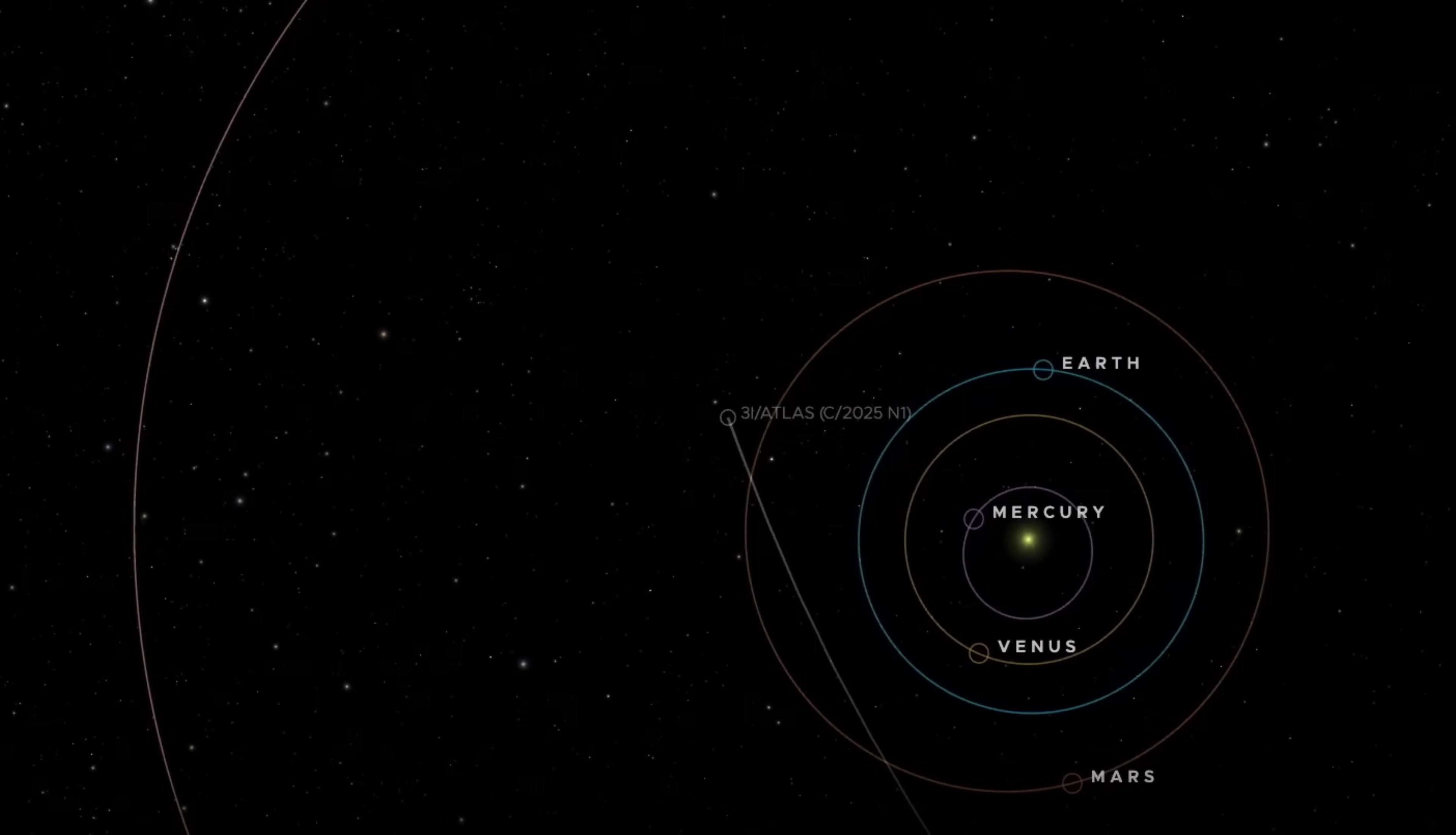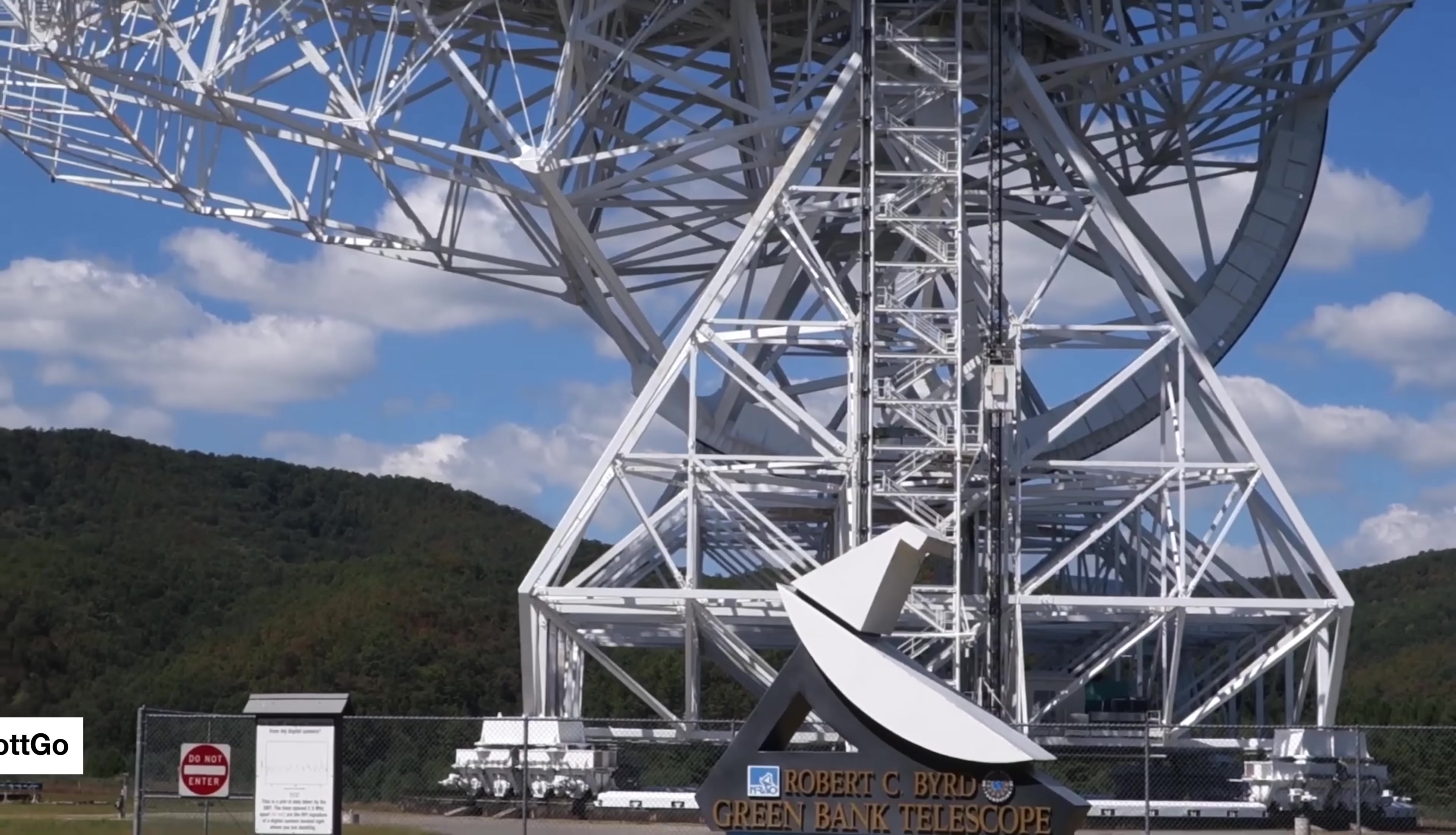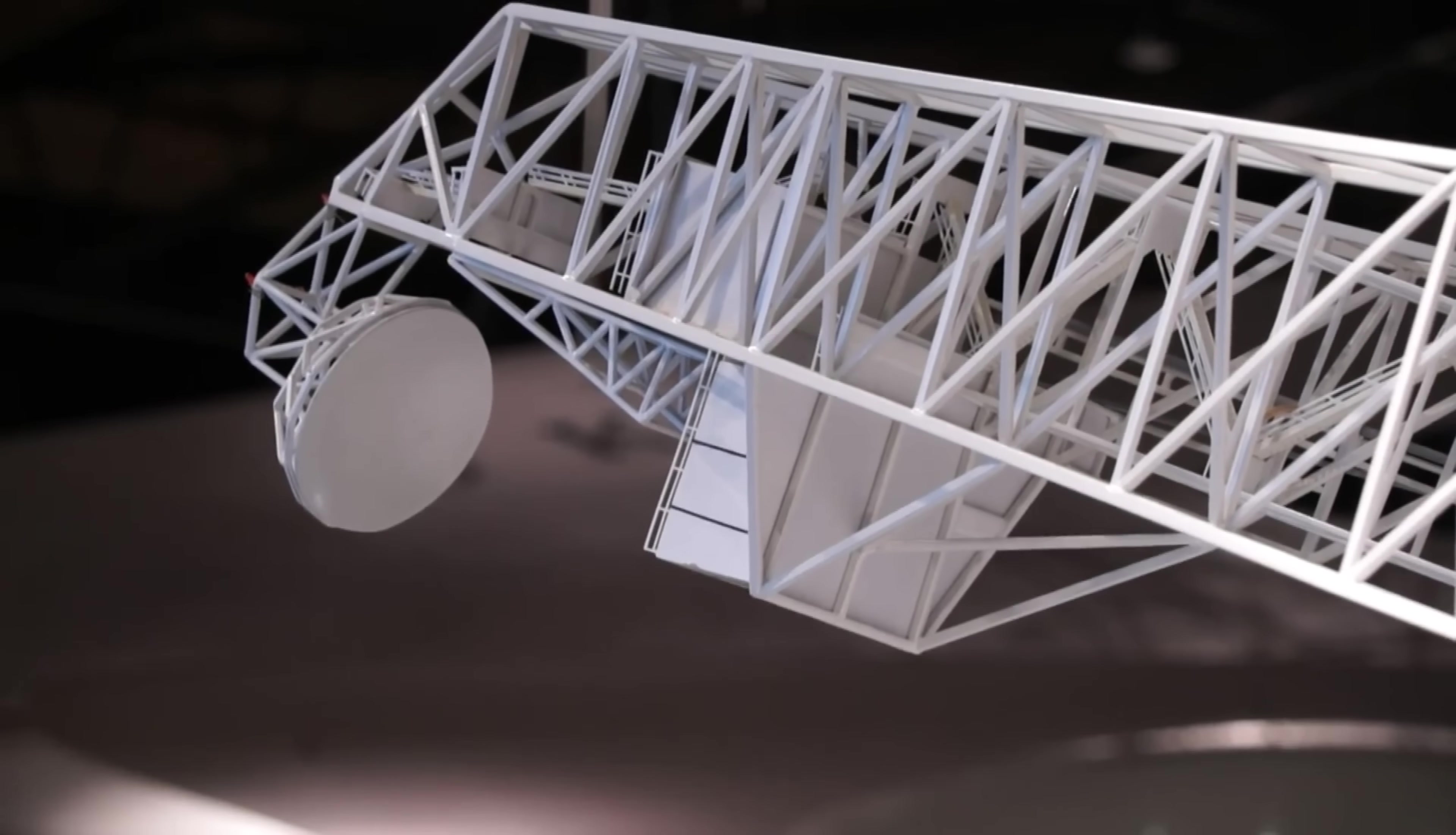As the interstellar comet 3I/ATLAS raced past Earth at a distance of 168 million miles, the Green Bank Telescope, a colossal hundred-meter dish nestled in the radio-quiet mountains of West Virginia, stared unblinkingly at the visitor, scanning the electromagnetic spectrum for the faintest whisper of artificial technology.